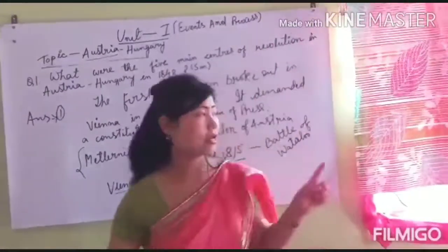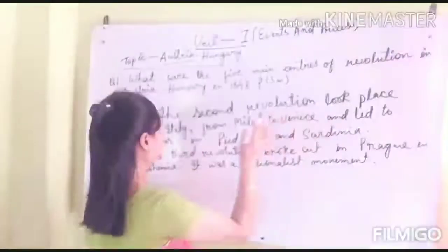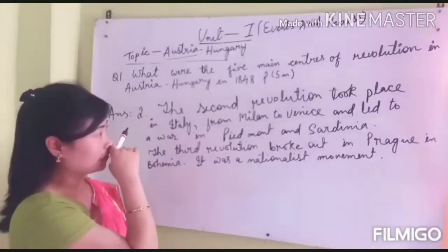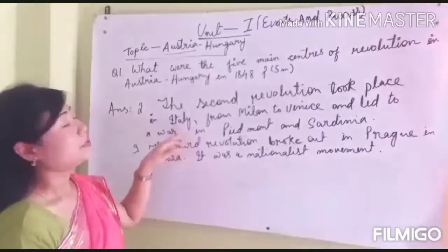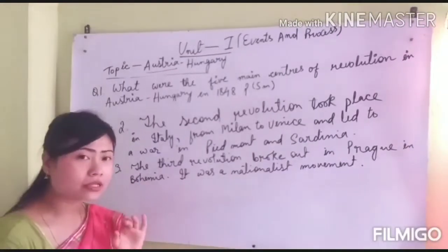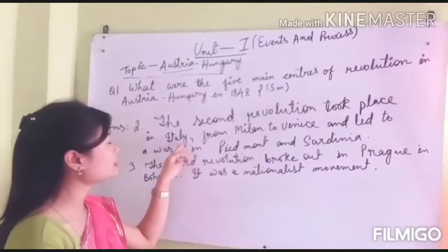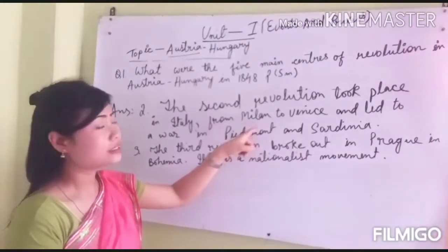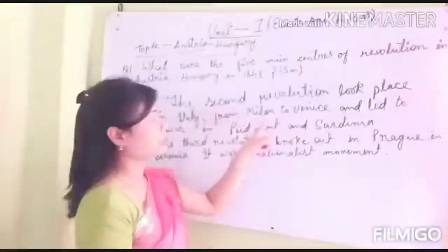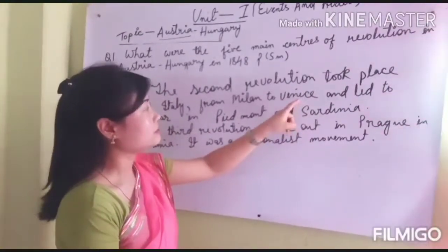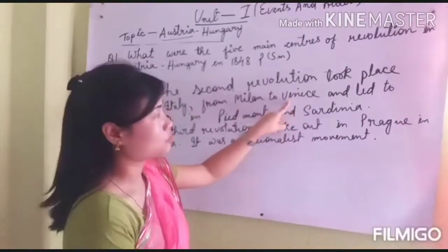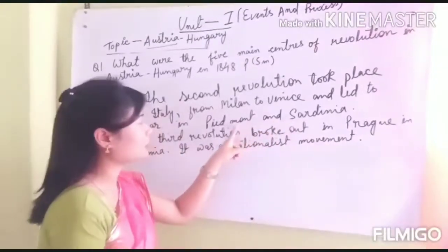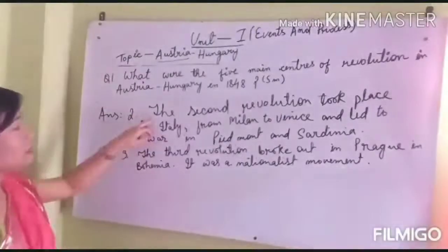The second revolution took place in Italy, from Milan to Venice, and led to a war in Piedmont and Sardinia. The second revolution took place in Milan, which is the capital city of Lombardy in Northern Italy.